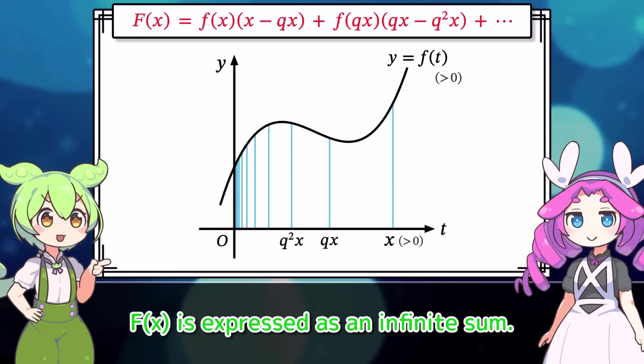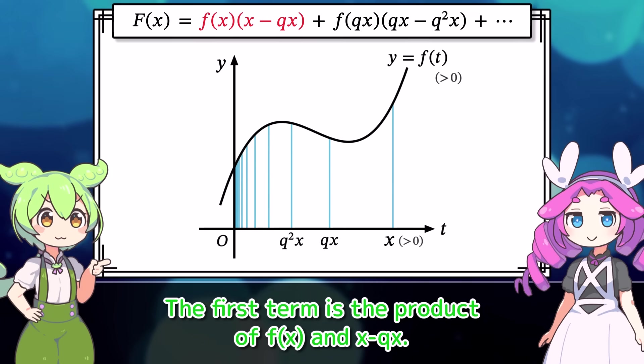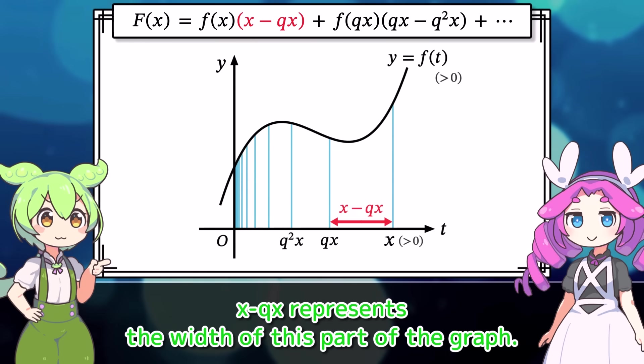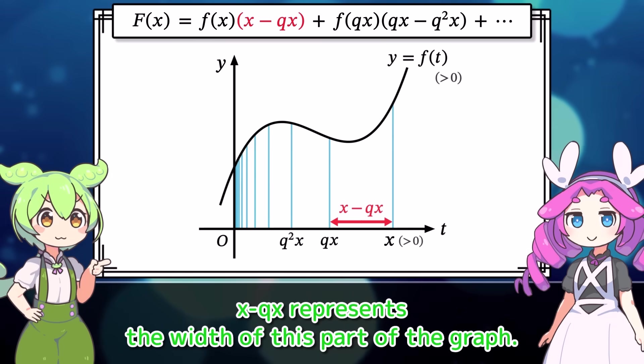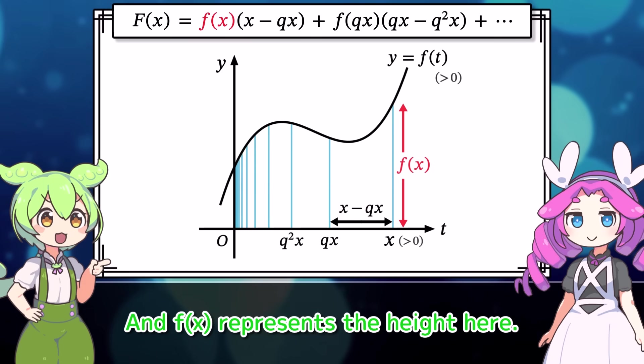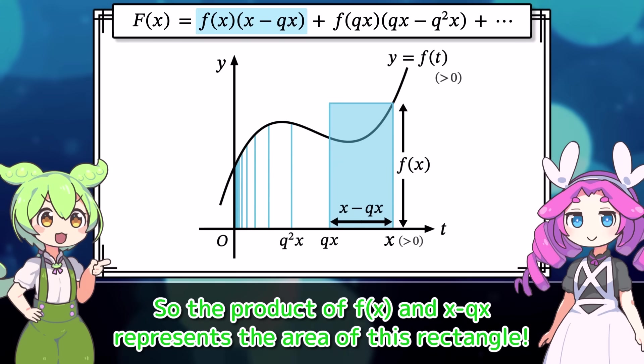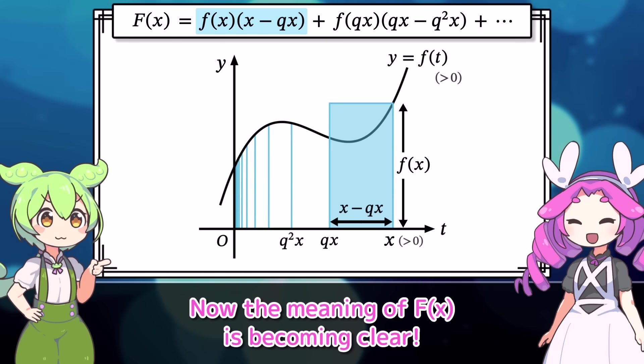Now then, capital F of x is expressed as an infinite sum. The first term is the product of f of x and x minus qx. x minus qx represents the width of this part of the graph. And f of x represents the height here. So the product of f of x and x minus qx represents the area of this rectangle. Now, the meaning of capital F of x is becoming clear.